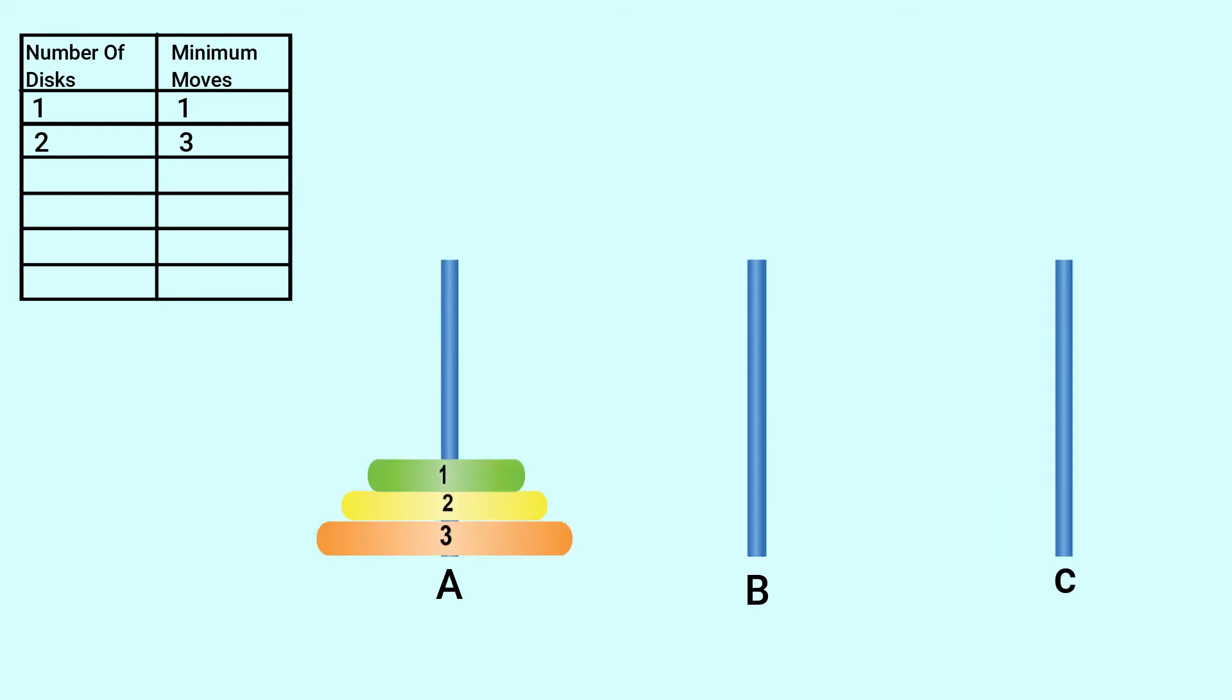Let us try with three discs. This problem is called a larger problem. Disc 1 moved from A to C. Disc 2 moved from A to B. Disc 1 moved from C to B. Disc 3 moved from A to C. Disc 1 moved from B to A. Disc 2 moved from B to C. Disc 1 moved from A to C. This whole process takes seven moves. So, for three discs, the minimum moves are 7.